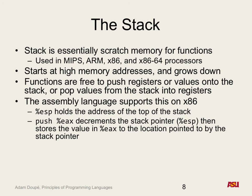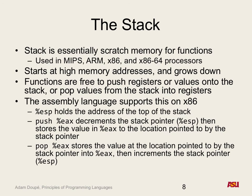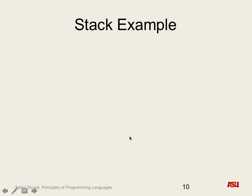Pop is the reverse: pop EBX takes the value that the stack is currently pointing to, stores it to EBX, and then increments the stack pointer by four. These are complements of each other — push decrements then stores, pop grabs the value then increments. When drawing the stack, FFFFFF is at the top, zero is at the bottom.